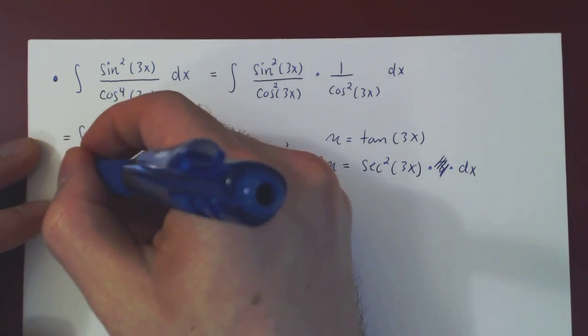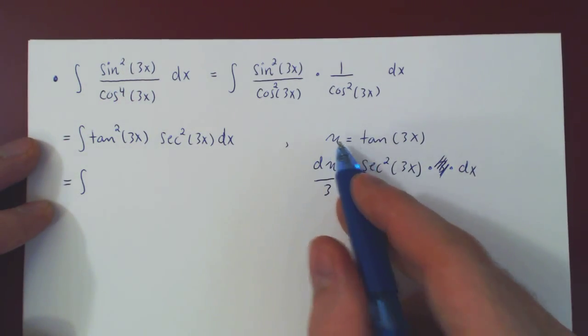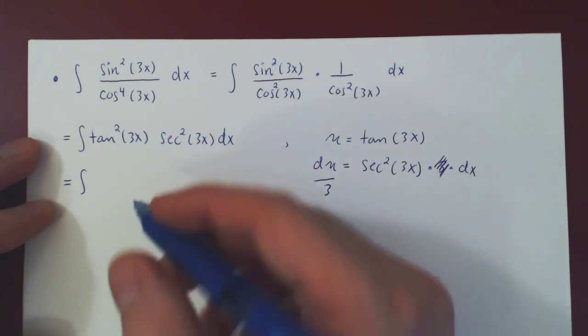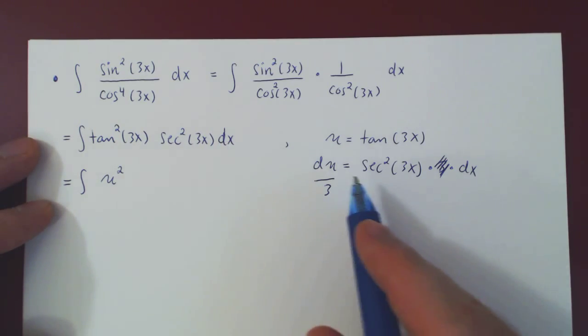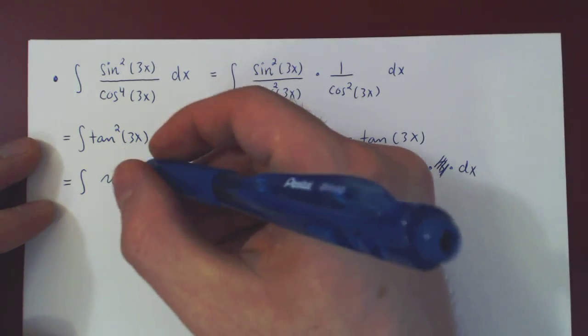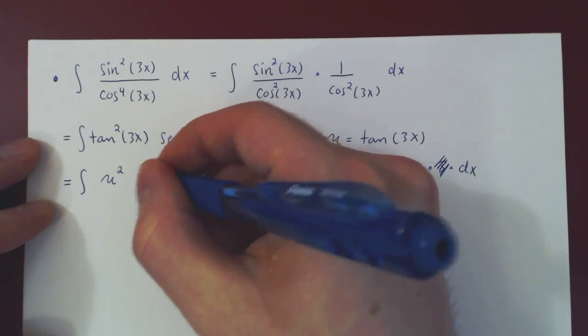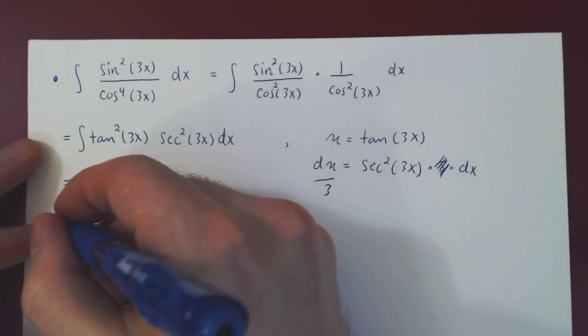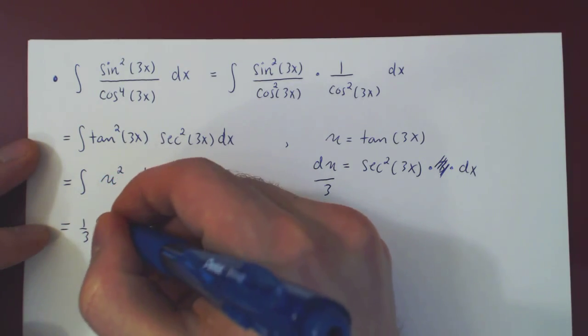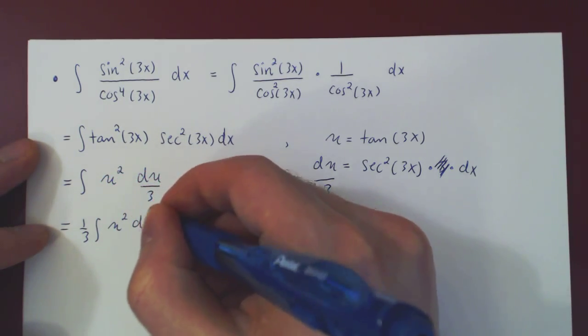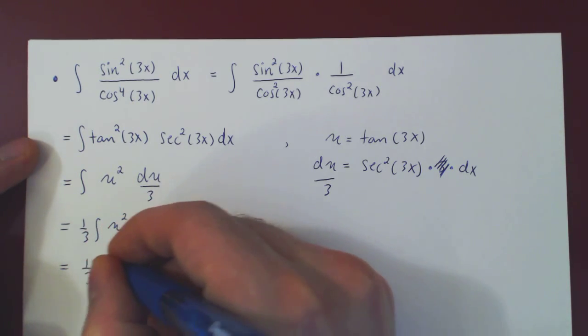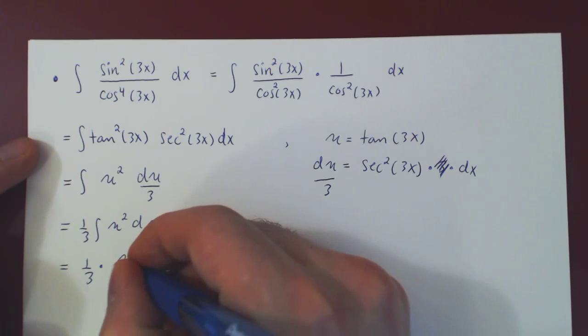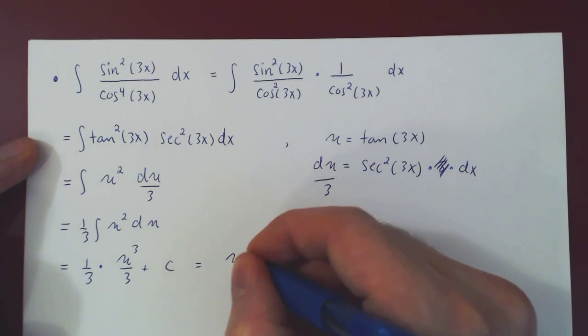And now we can replace, and you'll see we'll have a trivial integral. u is tan of 3x, and so tan squared of 3x is simply u squared. And secant squared of 3x dx is du over 3. And now we have a simple polynomial. Factor the 1 over 3 outside as a constant multiple. And we integrate u squared, of course, with the simple power rule. So a third times u cubed over 3 plus c, which gives you u cubed over 9 plus c.